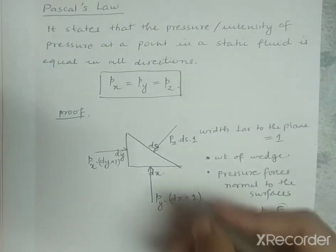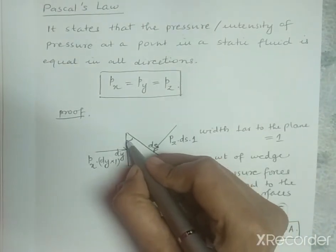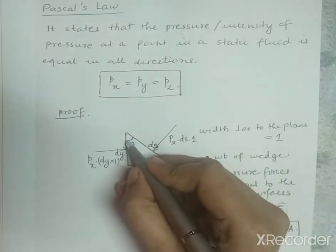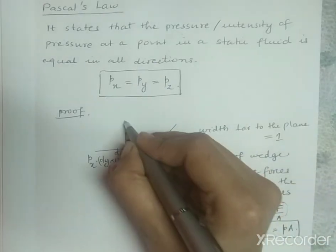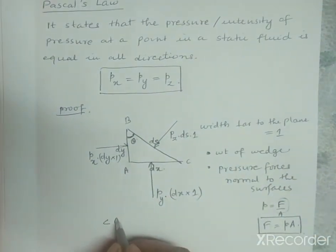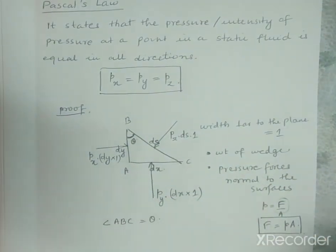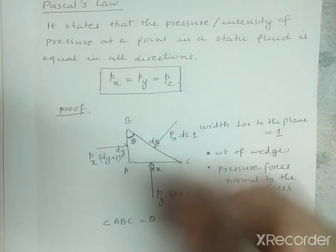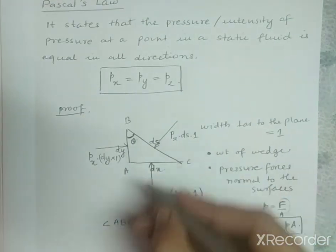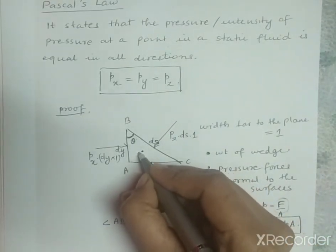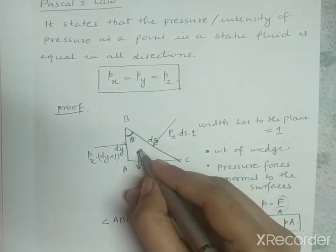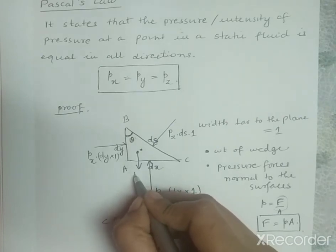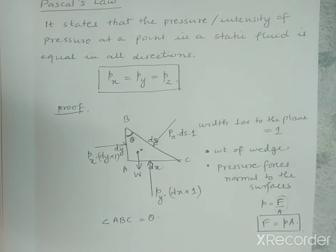Let theta be the angle at corner ABC of the wedge. The self-weight W acts at the centroid of this particular wedge. With this, I have drawn the free body diagram of this wedge.